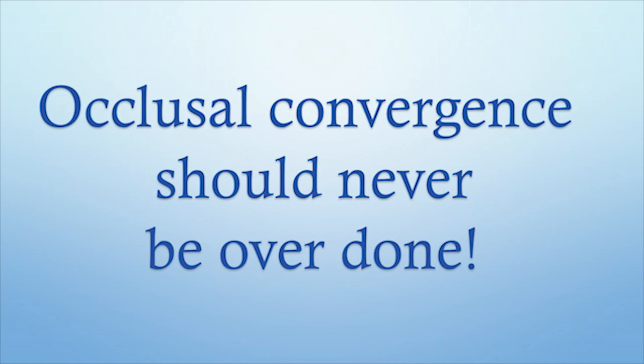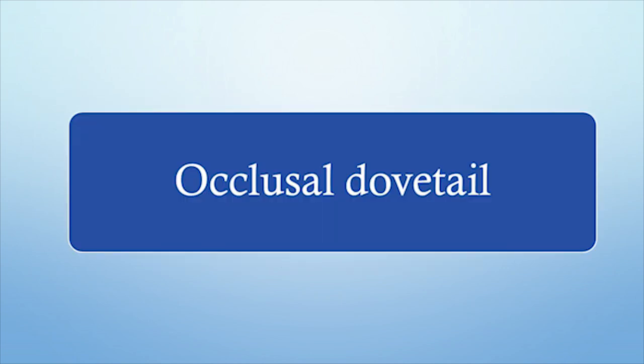This is how occlusal convergence gives retention to the amalgam. But it should never be overdone, because as we learned in the last video on resistance form, if the enamel is devoid of dentine, it becomes really weak. So you may get very good retention, but the top portion will simply collapse if you apply more force to the restoration and the tooth. The second most common primary retention feature for amalgam is the occlusal dovetail.